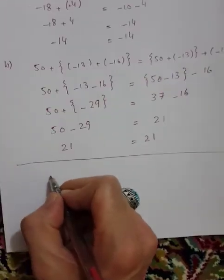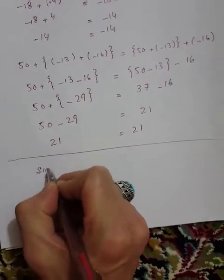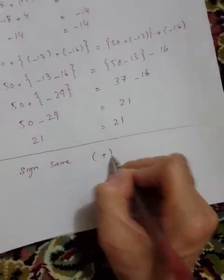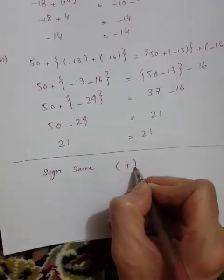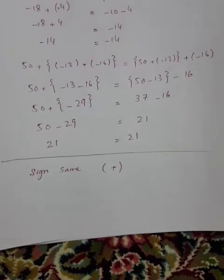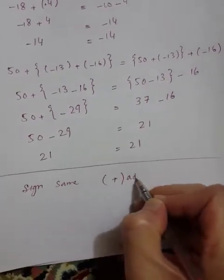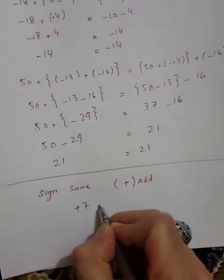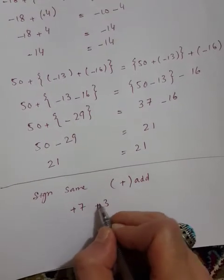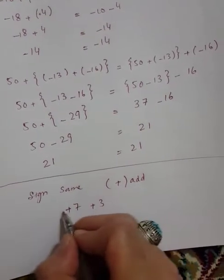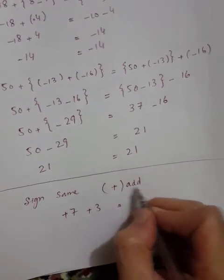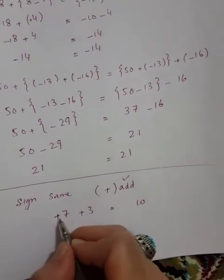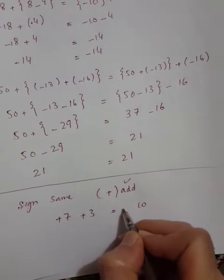If the signs are the same, when both numbers have plus signs, like plus seven plus three, same signs, you add them: seven plus three equals ten. The sign remains plus.